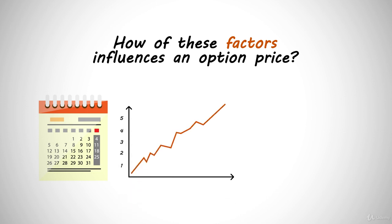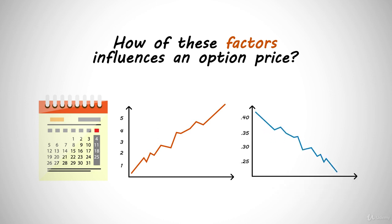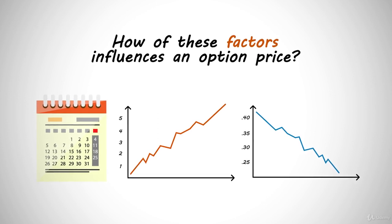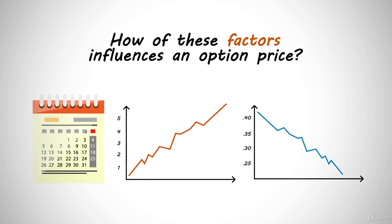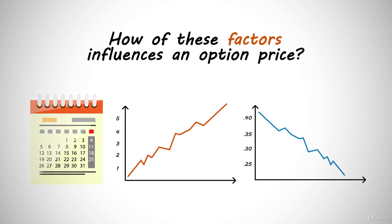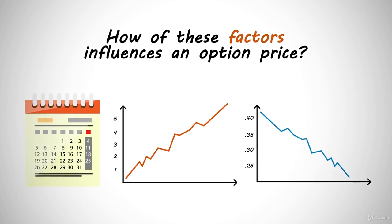If the stock goes up by $1, $2, or $5, how much will that change affect the option's value? If volatility drops by 5%, 10%, or 15%, what is that going to do to an option's price? Attempting to predict what will happen with an option's pricing can be difficult due to so many factors that come into play.